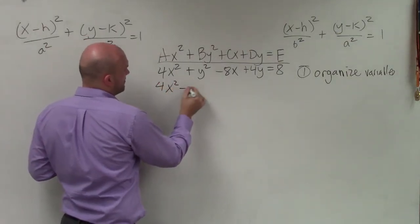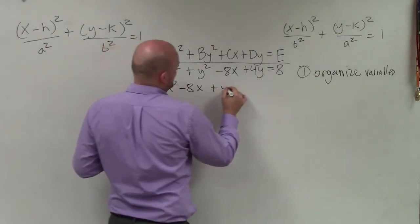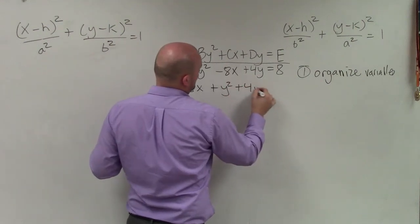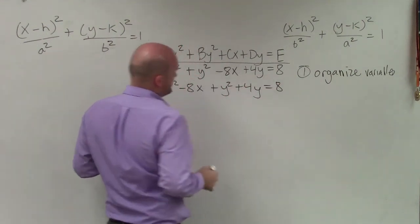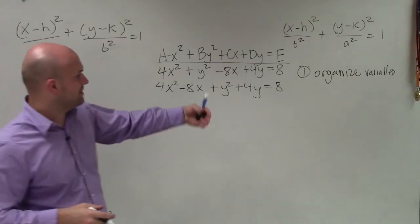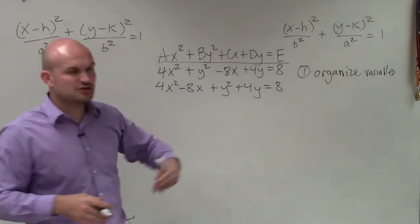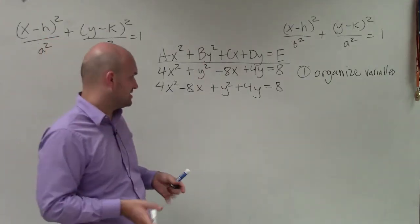So I organize my values. So I have 4x² - 8x + y² + 4y = 8. Now, sometimes you'll see that 8 will be with all your variables. You'll just want to add it to the other side, so then it's by itself.